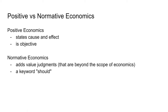Positive versus normative economics. Positive economics is an objective statement on causes and effects of things going on in the economy. For example, a positive economic statement would be: raising the minimum wage by $2 caused an increase in structural unemployment. Normative economics adds value judgments on top of economic analysis. A key word to look out for in normative economic statements is the word 'should.' For example, should the government raise taxes? Should the minimum wage be raised? These are normative economics.